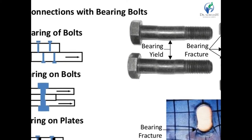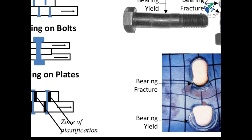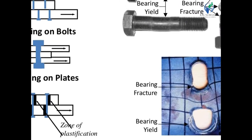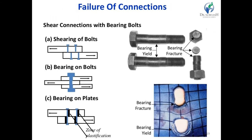After shearing, you can see from the figure how the bolt has changed — the diameter of the bolt changes. For bearing fracture, you can see the bearing force as well — these are the bearing fractures and bearing yield. The diameter of the bolt is under bearing force. The same occurs in the plate also. These are the two main failures that will be examined in our examples: shearing of bolt and bearing of bolt.